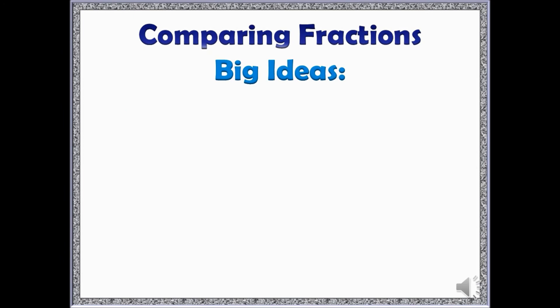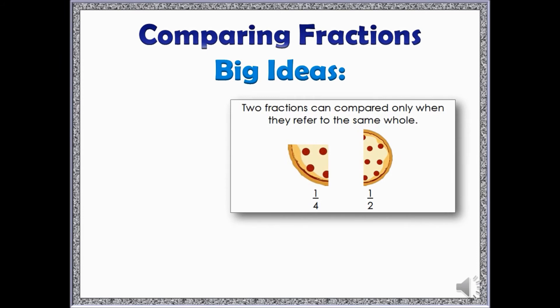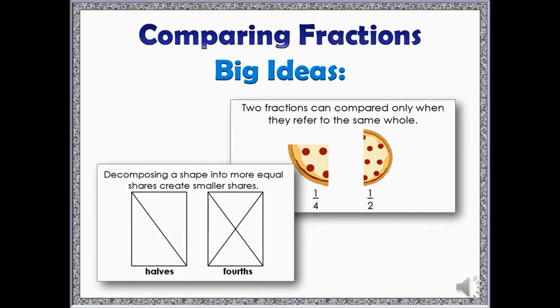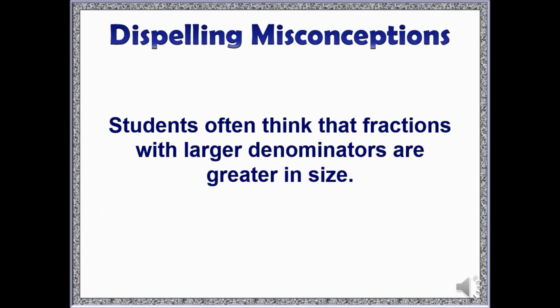The second standard that we will look at today relates to comparing fractions. In order for students to effectively compare two fractions, they must understand two big ideas. First, two fractions can only be compared when they refer to the same whole. For example, I cannot compare the size of a fourth of a large pizza to the size of one-half of a small pizza. Second, decomposing a shape into more equal shares creates smaller shares. Therefore, fourths would be smaller than halves.